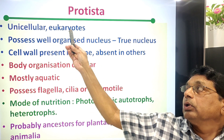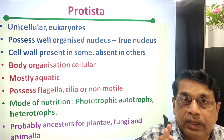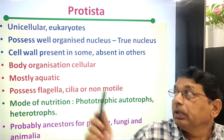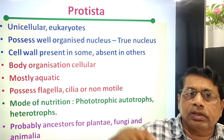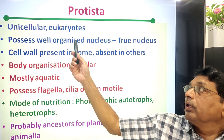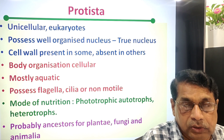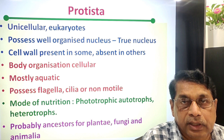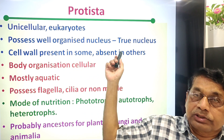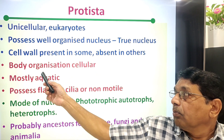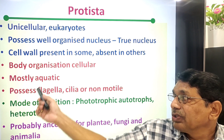Protista are unicellular eukaryotes. This is the main difference between Monera and Protista — Monera are prokaryotic, while Protista are eukaryotic. They possess a well-organized, true nucleus with a nuclear membrane, nucleoplasm, nucleolus, and chromatin network. Cell wall is present in some and absent in others, just like slime molds. Body organization is cellular, and they are mostly aquatic.